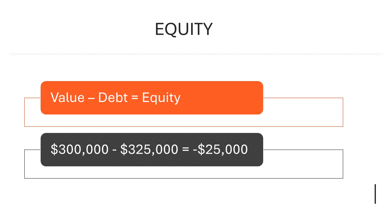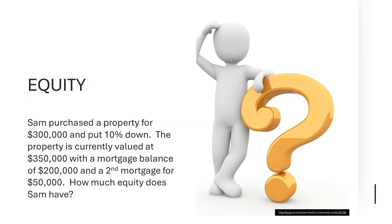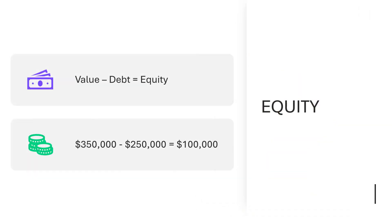Let's look at an equity problem you may see on your real estate exam. Sam purchased a property for $300,000 and put 10% down. The property is currently valued at $350,000, with a mortgage balance of $200,000 and a second mortgage of $50,000. How much equity does Sam have? Remember: home's value minus debt equals equity. On your licensing exam, extra numbers are often included just to test your focus. For this problem, all we need is the value and the debt. The value is $350,000 and the total debt between the first and second mortgage is $250,000. Sam has $100,000 in equity.